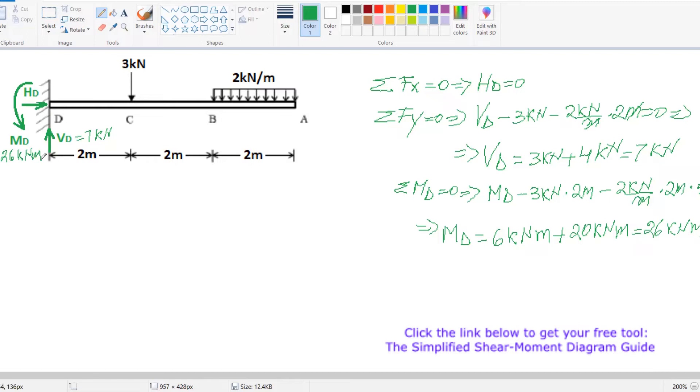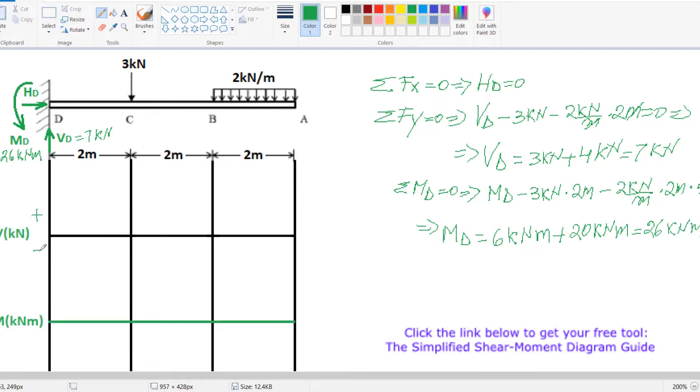Perfect. Next we will draw the diagram. Starting the diagram always at zero and we go up with 7 kN. Now looking at this first section, we don't have any load, so our diagram will be constant. It's positive, and this is 7.